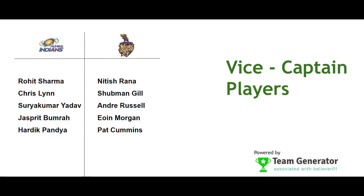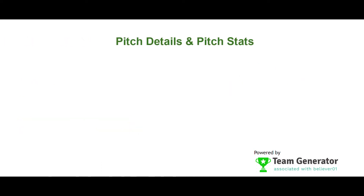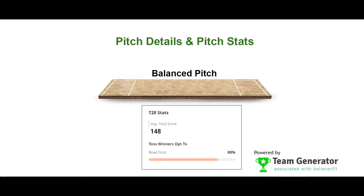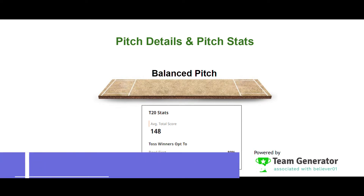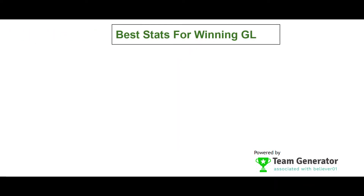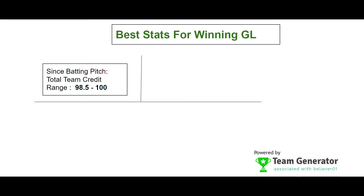The pitch will be a balanced pitch, balanced for both batting and bowling. The total average score will be 148 runs, meaning a total of around 300 runs across both innings is expected. Since it is a balanced pitch, we can go with a credit range of 98.5 to 100 to generate the Grand League winning teams.